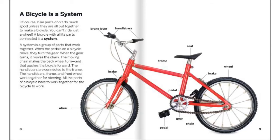A bicycle is a system. Bike parts don't do much good unless they're all put together to make a bicycle. You can't ride just a wheel. A bicycle with all its parts connected is a system. A system is a group of parts that work together. When the pedals on a bicycle move, they turn the gear. When the gear turns, it moves the chain. The moving chain makes the back wheel turn and that pushes the bike forward. The handlebars are connected to the frame. The handlebars, frame, and front wheel work together for steering. All the parts of a bicycle have to work together for the bicycle to work.